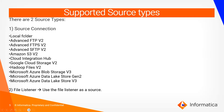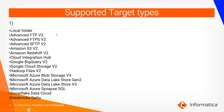The supported source types — the connections you can use — are: Local Folder, Advanced FTP V2 or FTPS V2, S3 V2, Cloud Integration Hub, and Microsoft Azure Blob Storage and Data Lake Storage. A second source type is File Listener. When you use File Listener as a source, whenever the File Listener receives events, the File Mass Ingestion task gets triggered and all files from the source move to the target.